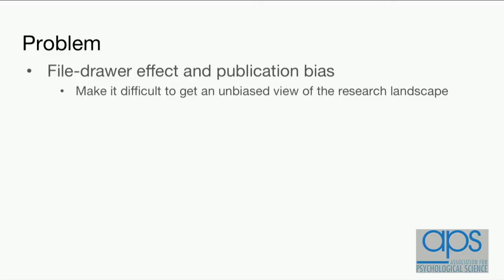So what is the problem that is leading to the suggestion for pre-registration and pre-analysis plans? There are a couple of problems. One is something called the file drawer effect and publication bias. Not every study that we do is published — some research can never find a home in a journal. This makes it really difficult to discover research that has been done but hasn't been published. We know that research isn't published at random, and research that supports its hypothesis is more likely to be published. This is called publication bias.